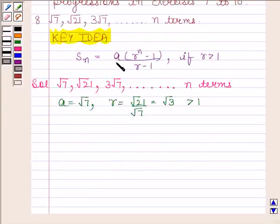We have learnt in the key idea that if R is greater than 1, then sum of n terms of GP is given by A into R to the power n minus 1 upon R minus 1. Now substitute the value of A and R in this formula.